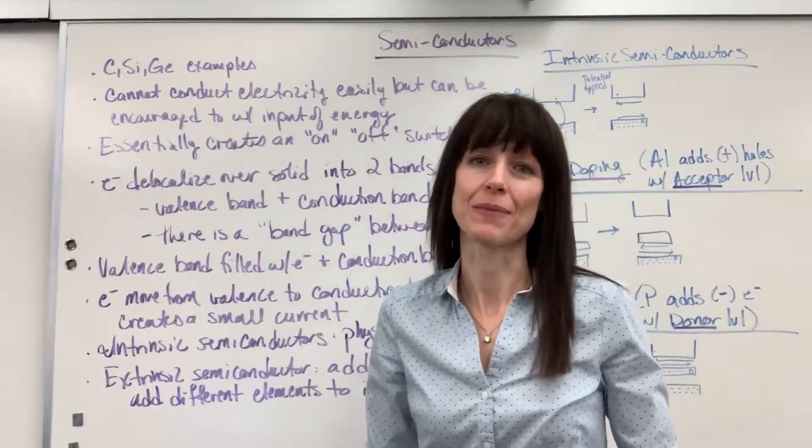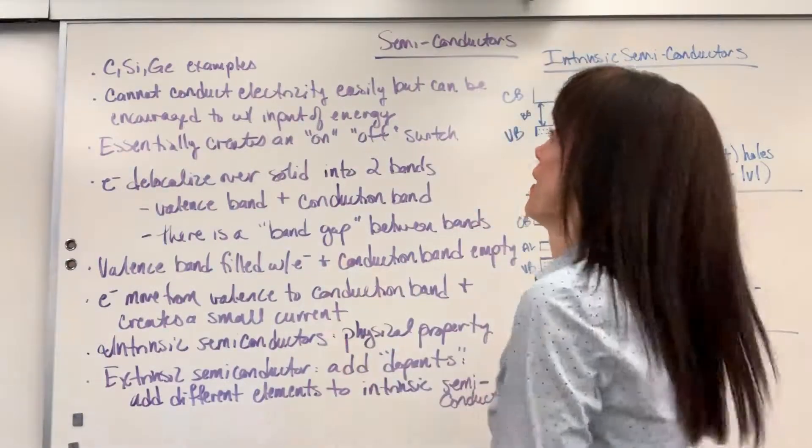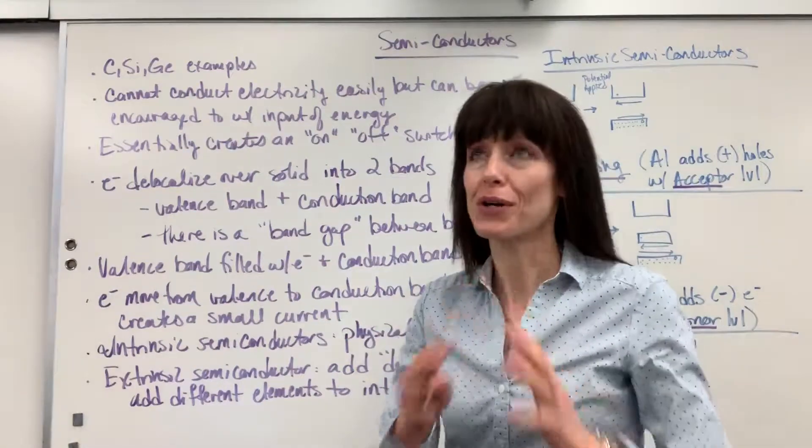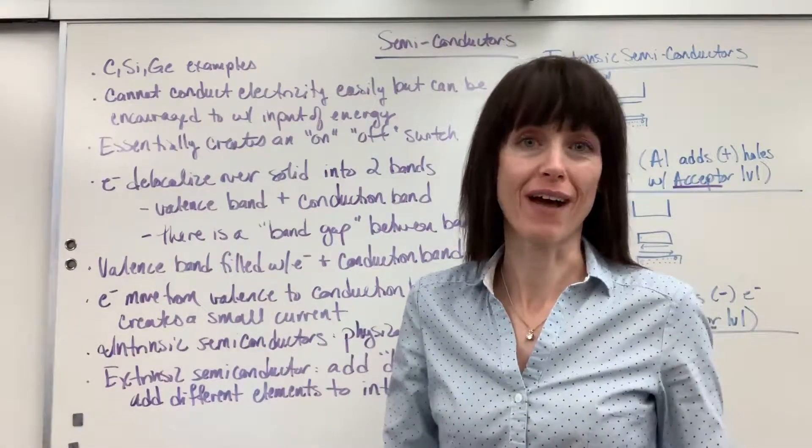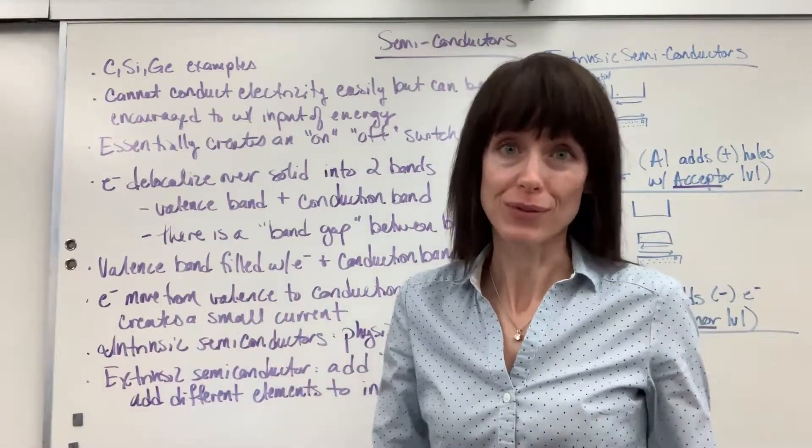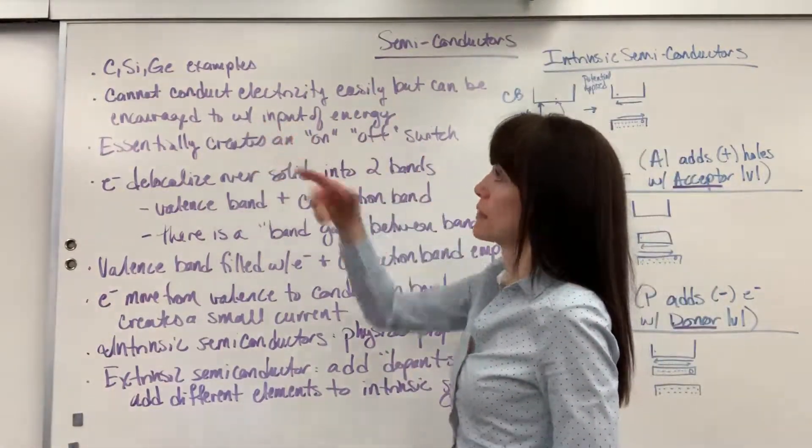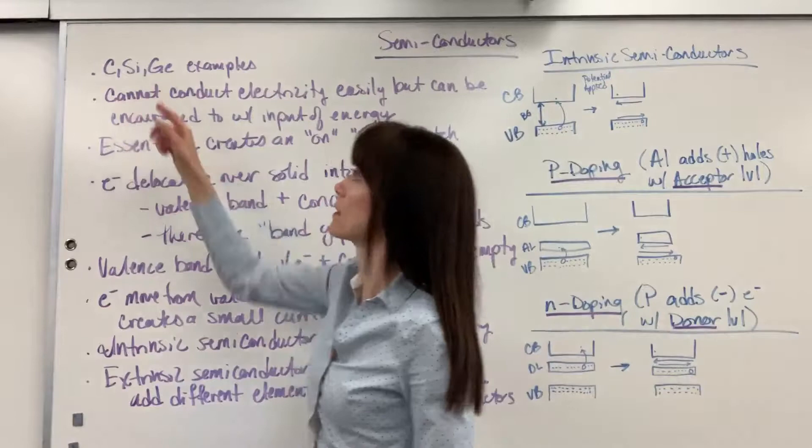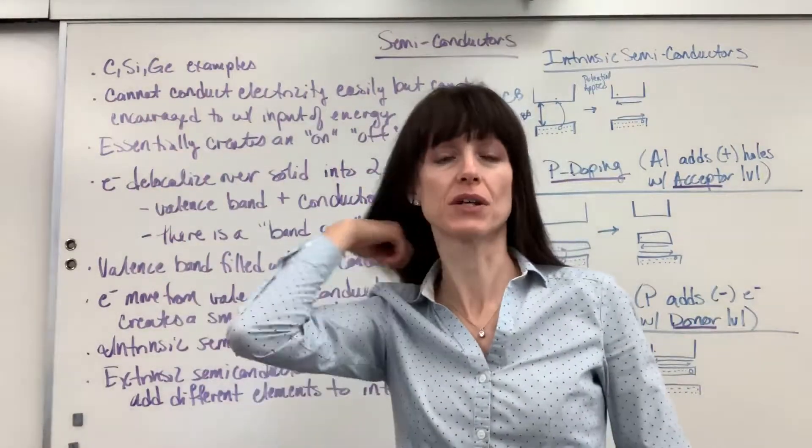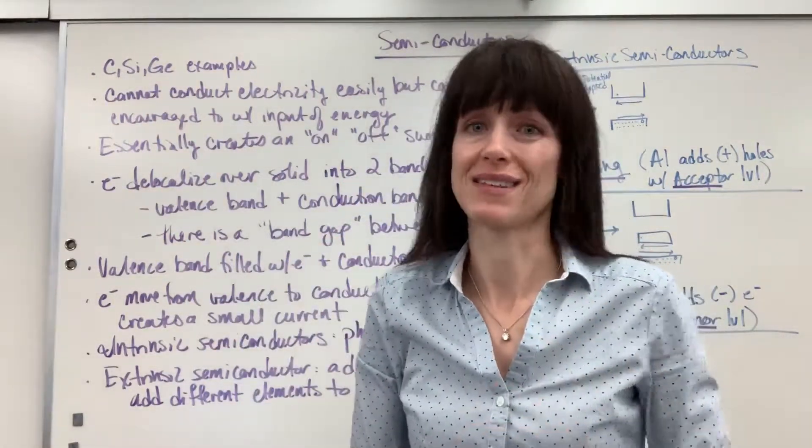Hi! Today we're going to talk about semiconductors. Alright, semiconductors, you've heard of them, I'm sure, because of Silicon Valley. They've totally revolutionized our computers. Here are some examples of semiconductors. It's going to be carbon, silicon, and germanium. And the reason why they're special is because they only have four valence electrons.